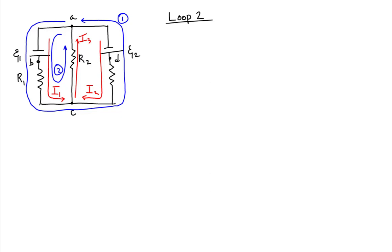We are focusing on loop 2, so we don't need to look at the current in the branch on the right, but we do need to look at currents I1 and I3. We don't need to look at loop 1 anymore, so I can get rid of that.